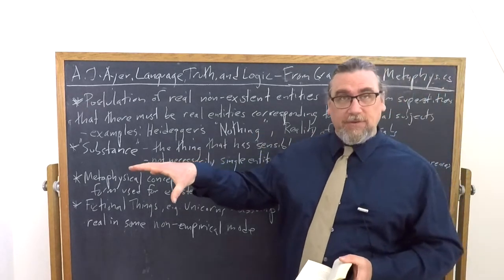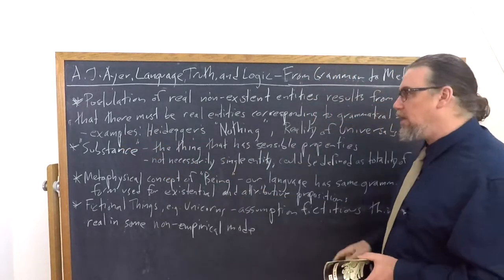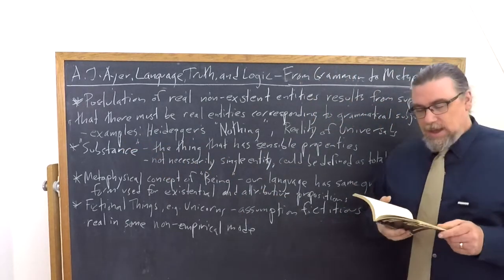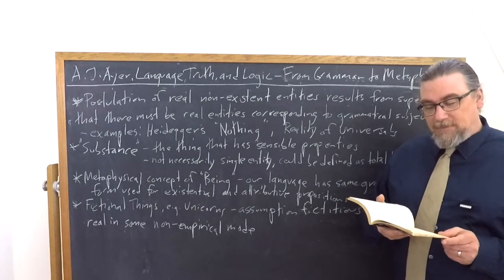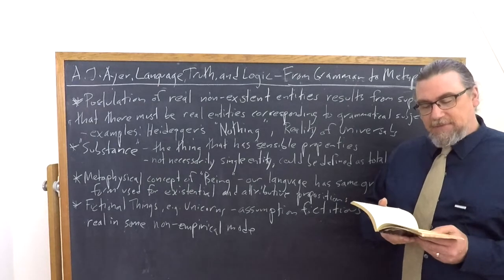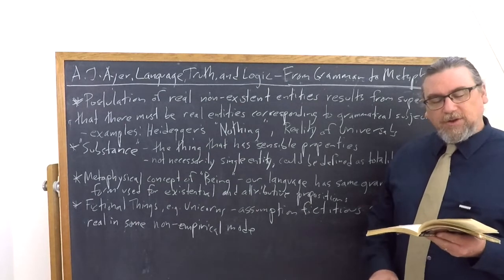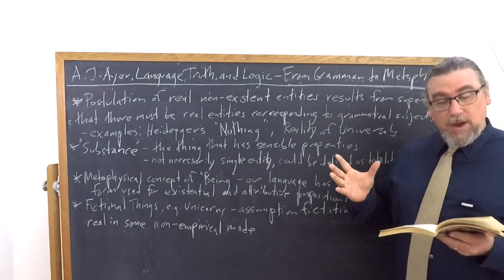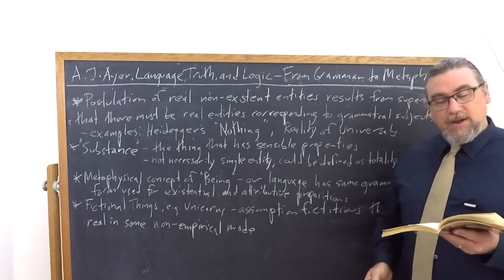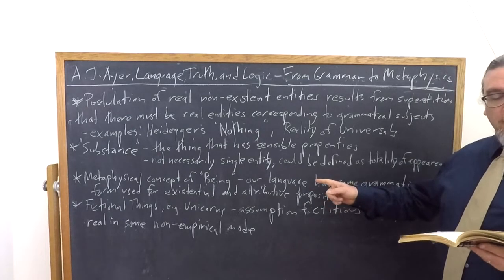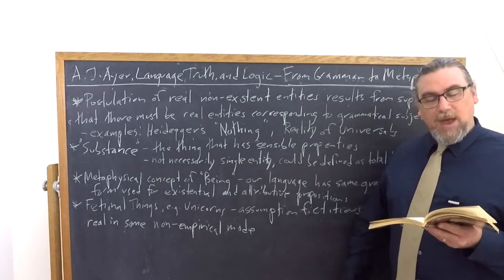Now, you can observe that something exists, and you can also observe that something exists in a certain way, that it has properties. So, he says here that a simpler and clearer instance in the way in which a consideration of grammar leads to metaphysics is the case of the metaphysical concept of being. The origin of our temptation to raise questions about capital B Being, about which no conceivable experience would enable us to answer, lies in the fact that in our language, sentences which express existential propositions and sentences which express attributive propositions may be of the same grammatical form.